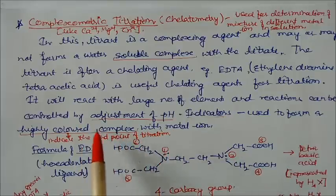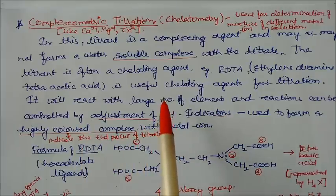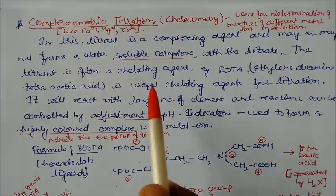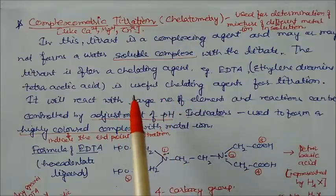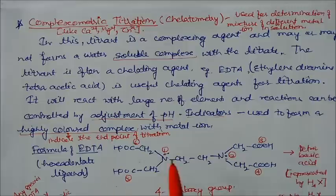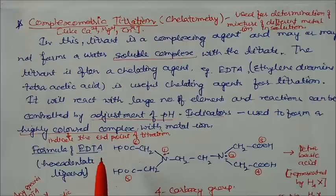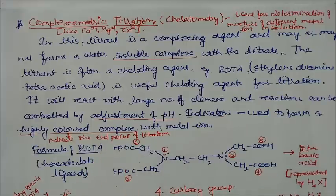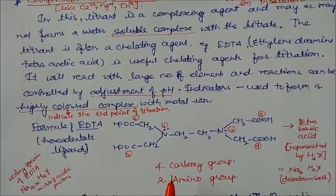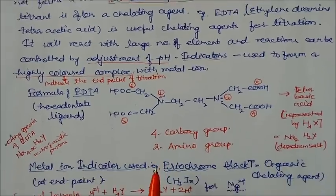EDTA will react with a large number of elements, and reactions can be controlled by adjustment of pH. pH plays a very important role in reactions of the chelating agent with the titrant. Indicators are used to form a highly colored complex with the metal ions at the end point of the titration.